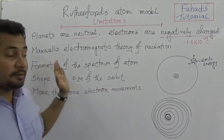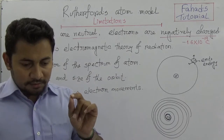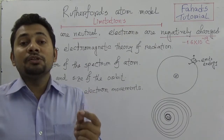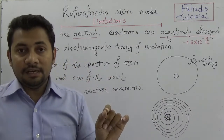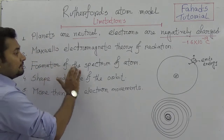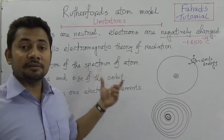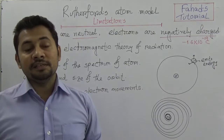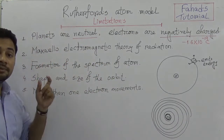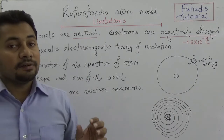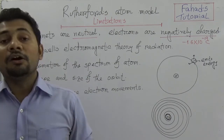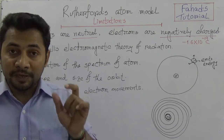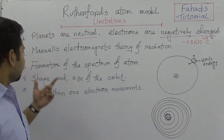Number three is the formation of the spectrum of the atom. According to Rutherford's solar model, there was no correct idea of the formation of the spectrum of the atom. The concept of atomic spectrum comes from the Niels Bohr atomic model, which will be covered in the next video. So the third limitation of Rutherford's model is that it did not state or give any idea about the formation of the spectrum of the atom.